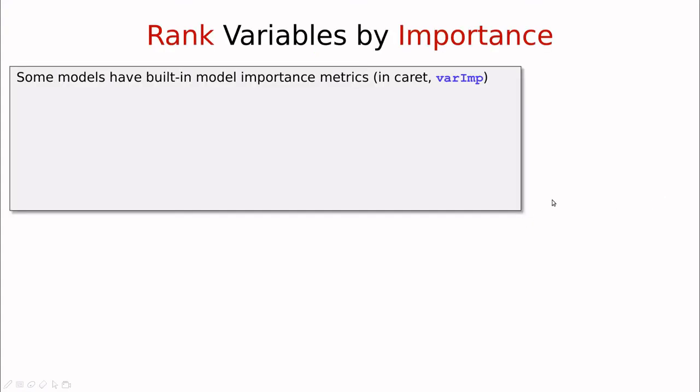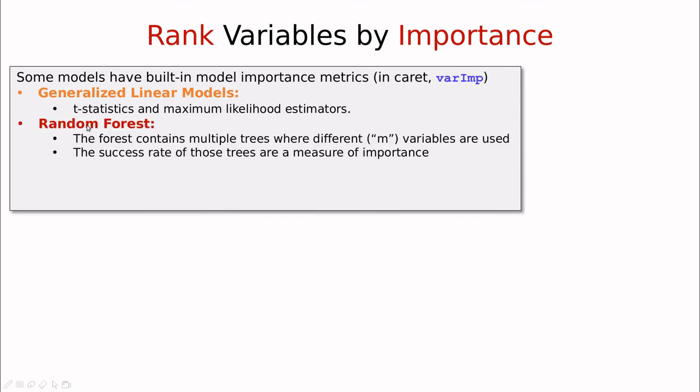Okay, tip number three. For some algorithms, CARET provides this function called variable importance. And this only works for generalized linear models like logistic regression, and of course traditional regression, random forests because of that, because we are using just m variables out of the total number of variables.